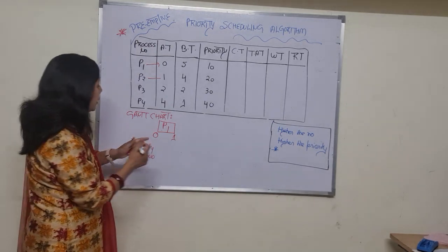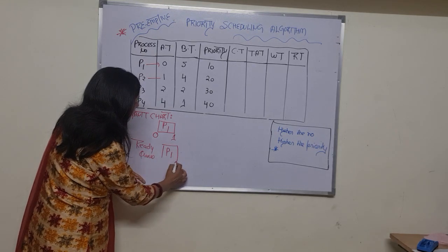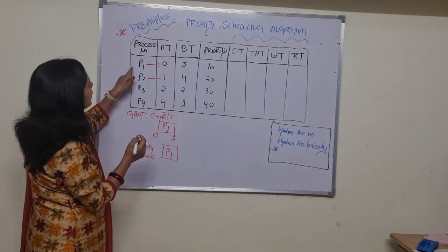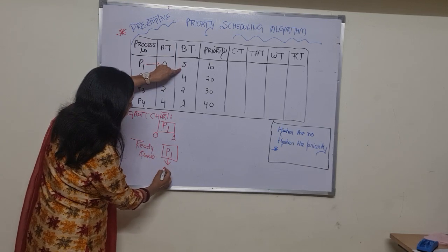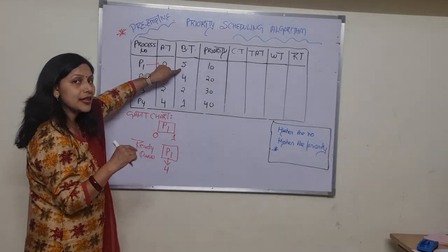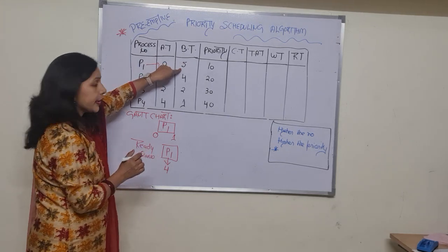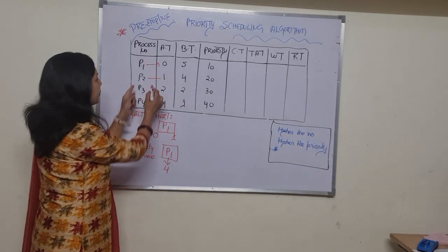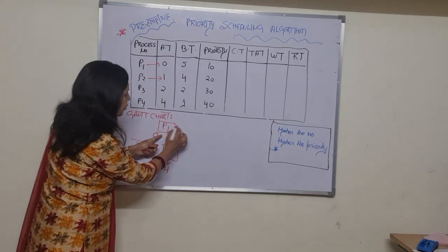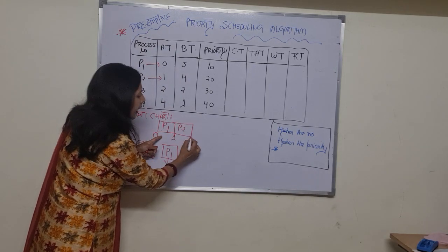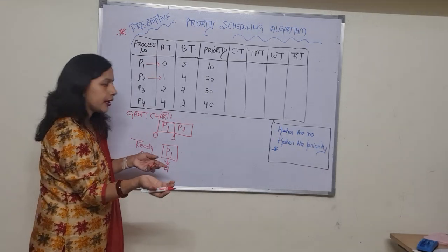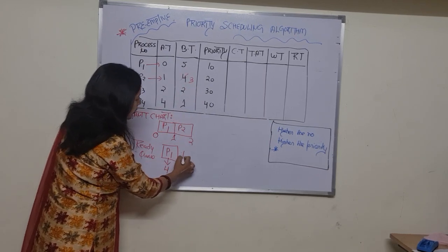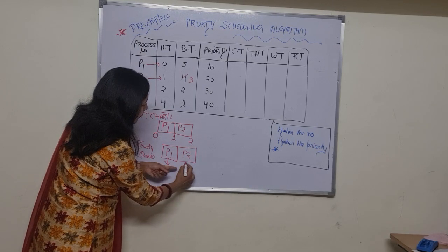After P1 runs from zero to one, the remaining burst time for P1 is four. Between zero and one, P2 has also arrived at time zero. So P2 is allotted the CPU for one quantum of time — from one to two — and its remaining burst time becomes three.